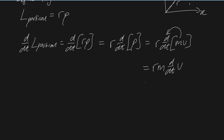This should be setting off alarm bells now, because we can write that as rm × dv/dt, and we know that dv/dt is just the acceleration of our particle. So we can write that as rma.